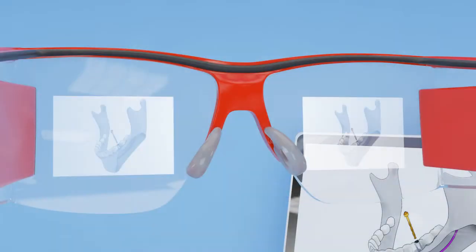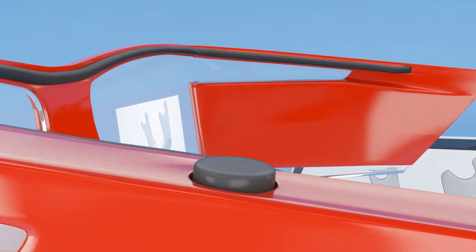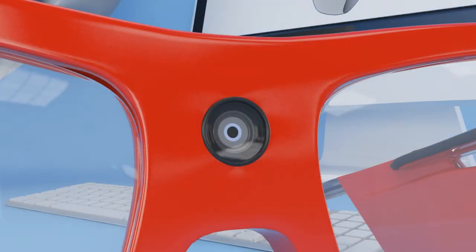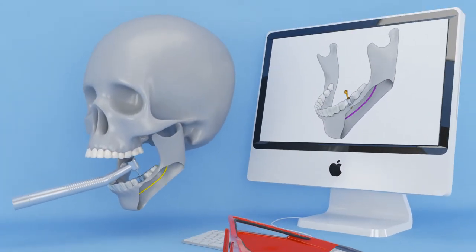A button located near the temple allows Foresight to be activated when required and turned off with ease. Foresight's high-definition camera is centrally located to track the lower jaw and drill piece through SIFT features that accurately correlates their positions.